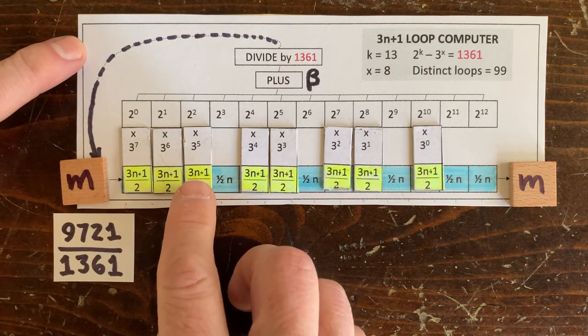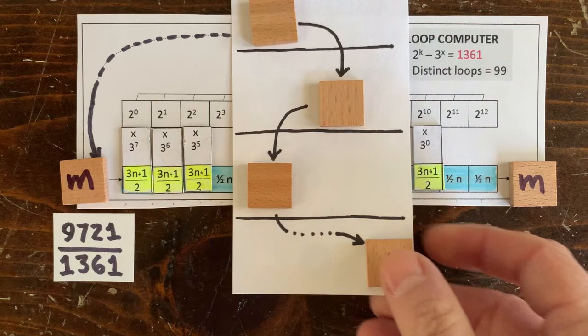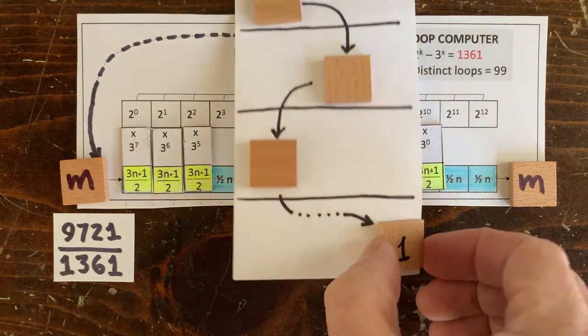Well, m would have to be huge. If m is small, say under a billion billion, then we'd know about that loop already because we know all the small numbers go to 1. But we can try.